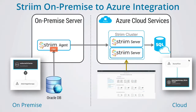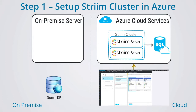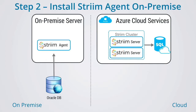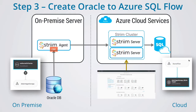This three-part tutorial shows you how to integrate data in real-time from a database on-premise to Azure SQL DB in the cloud. The first step is to create a stream cluster in Azure using our stream for real-time integration to SQL database marketplace offering. Next you will need to install a stream agent on-premise, enabling you to capture data in real-time from the local database. And finally, you'll create and run a data flow that moves the data in real-time from the on-premise database to Azure SQL DB.